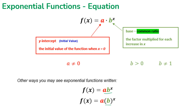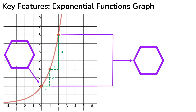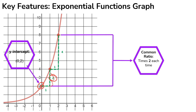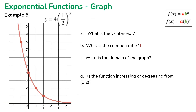Let's take a look at the key features of this exponential graph. The y-intercept, or initial value, is at (0, 2). Looking at the common ratio: from (0, 2) to (1, 4), the y-value is multiplied by 2 each time. To write the equation: f(x) = 2 · 2ˣ, where a = 2 is the initial value and b = 2 is the common ratio.